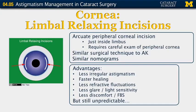Limbal relaxing incisions are another surgical intervention to help correct corneal astigmatism. They are similar to AK cuts but are arcuate peripheral corneal incisions placed just inside the limbus, not in the mid-periphery. Performing these requires careful preoperative examination of the peripheral cornea. The surgical technique is otherwise very similar to astigmatic keratotomy, with similar nomograms available. Advantages compared to AK include less irregularity, faster healing, fewer refractive fluctuations, and less glare, light sensitivity, discomfort, and foreign body sensation — though they can still be somewhat unpredictable.